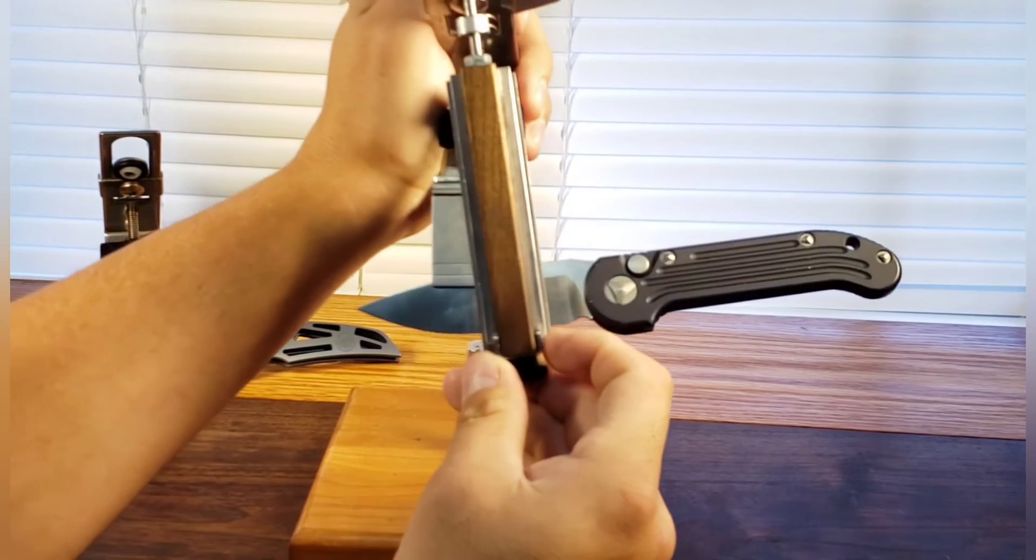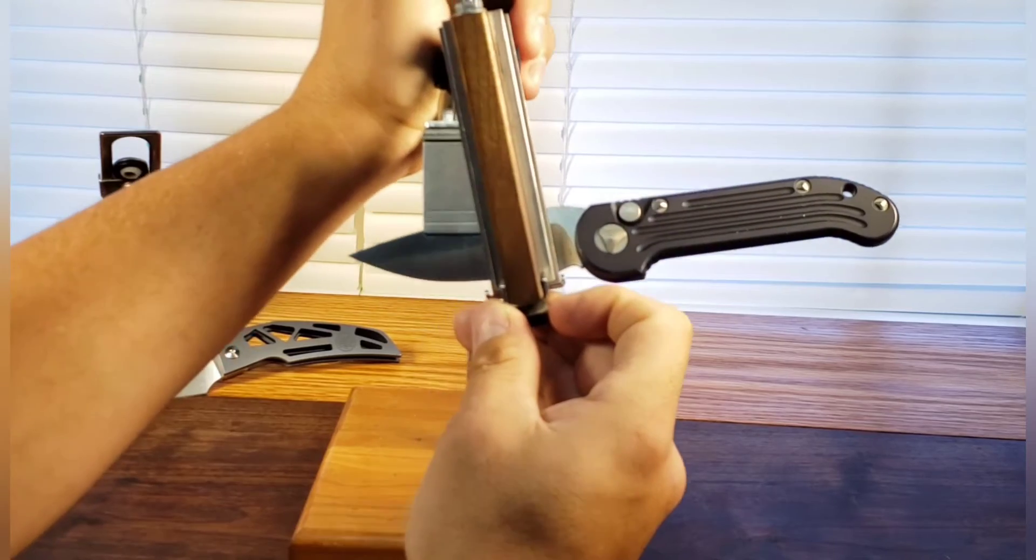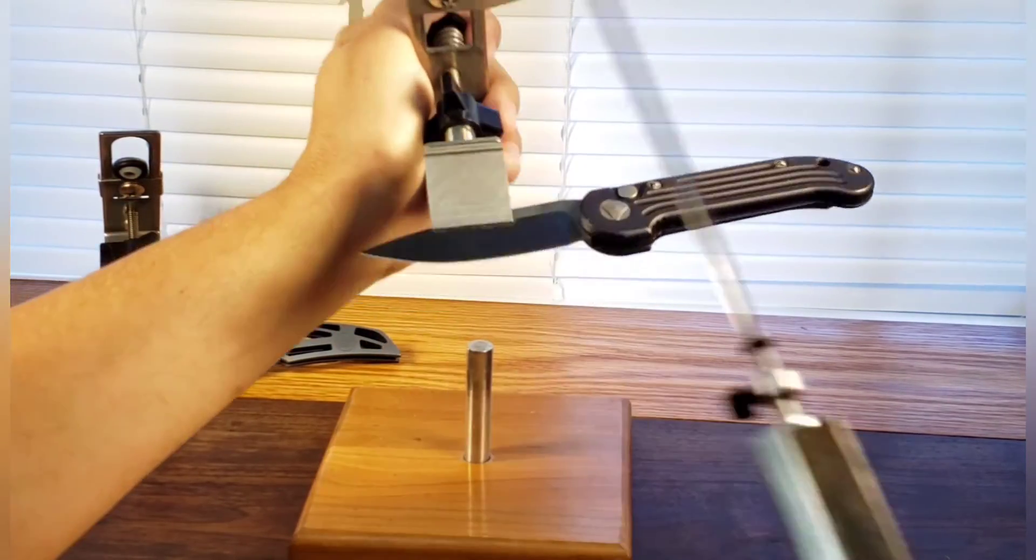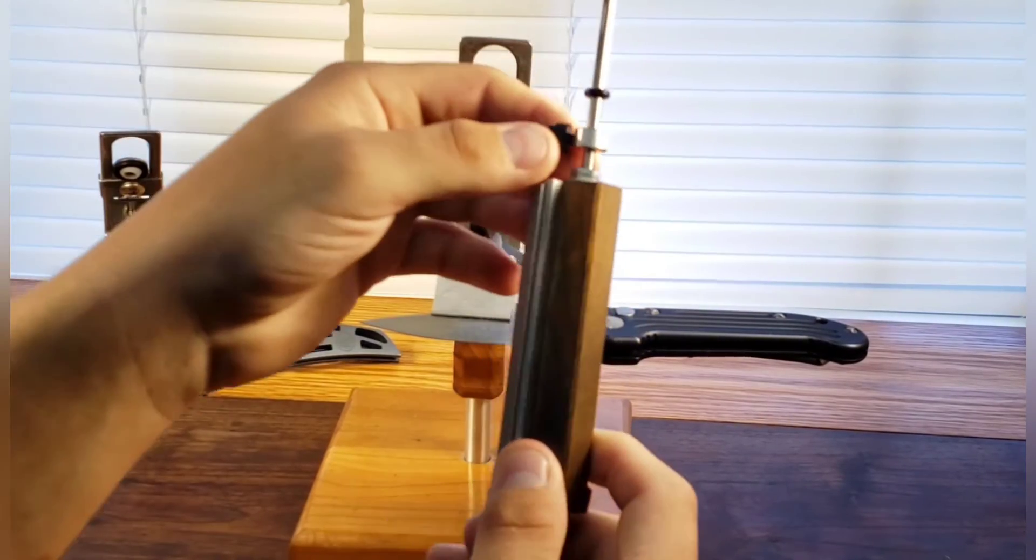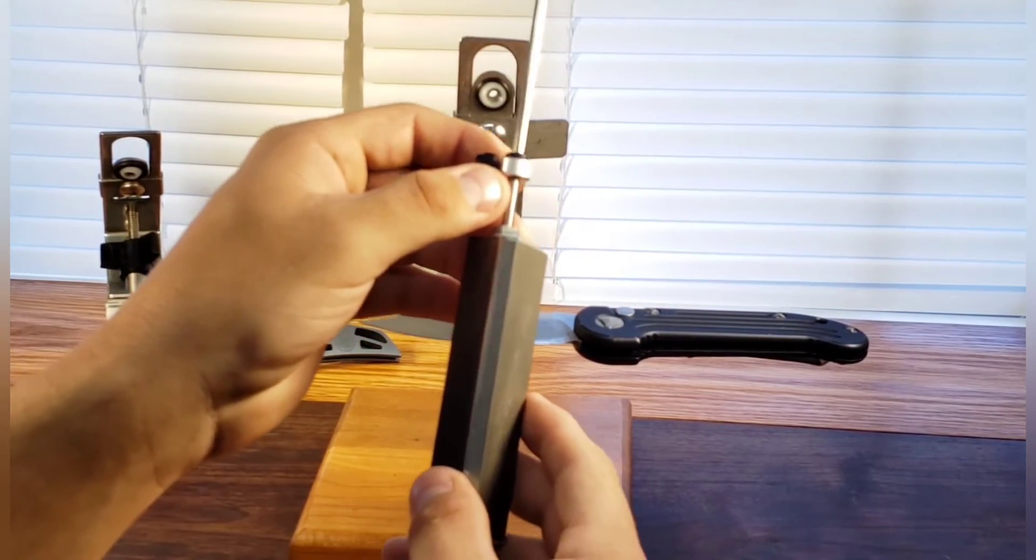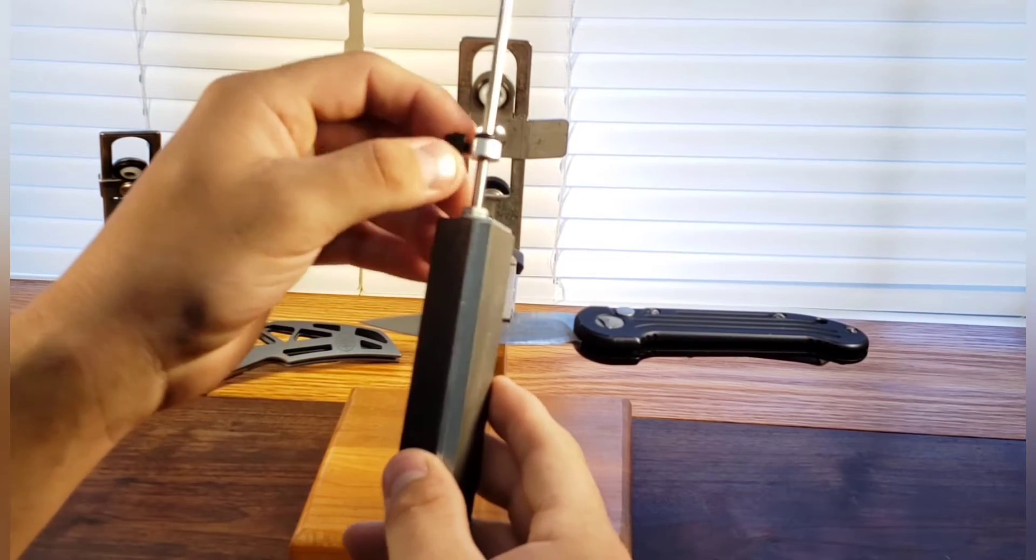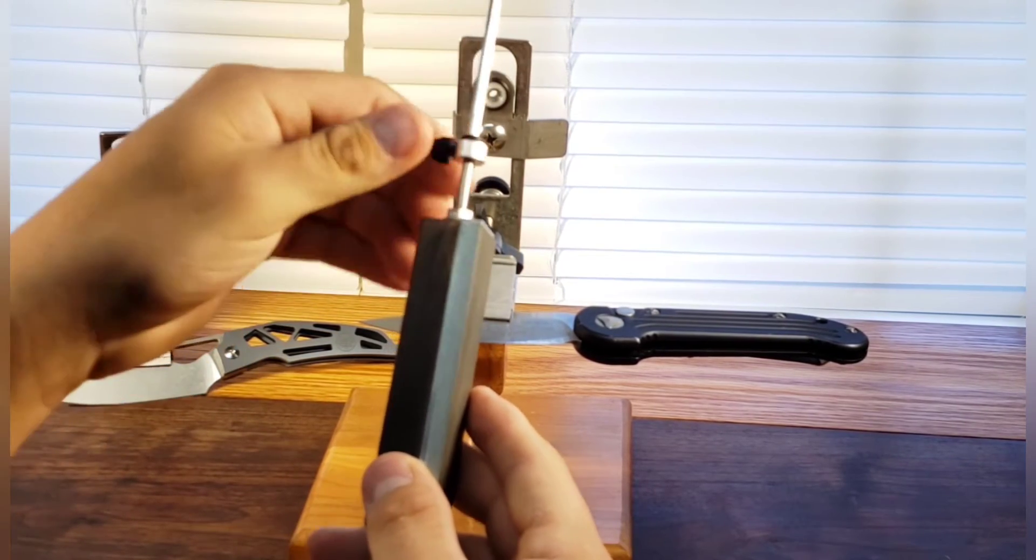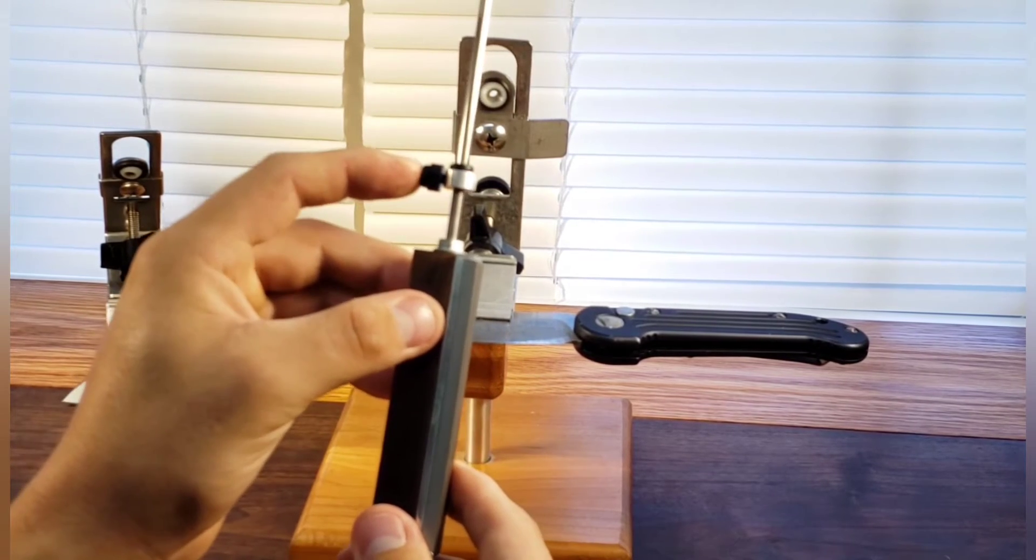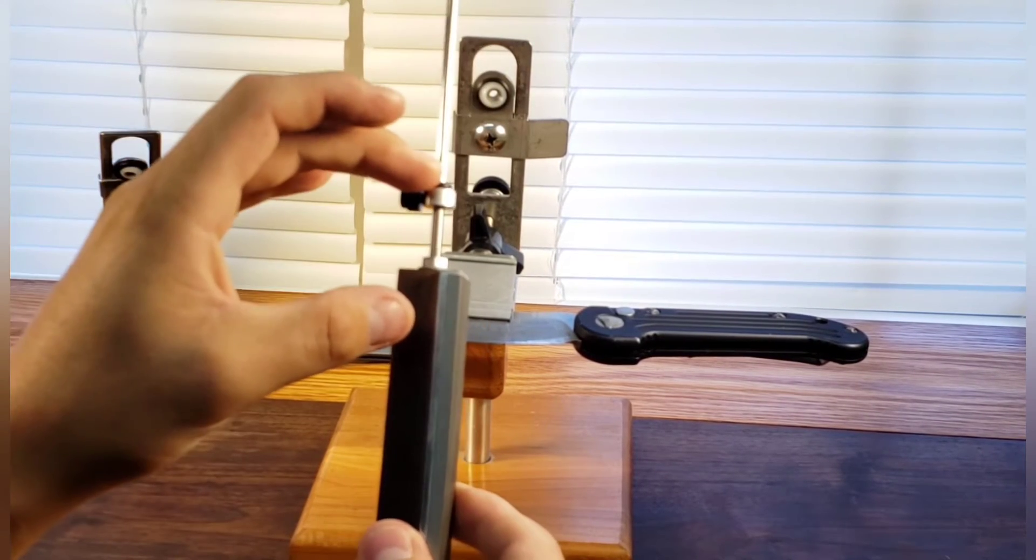So now that that's done, you take your stop collar itself and you'll want to slide it up to butt up with that o-ring and you'll want to lock it down. The reason for using the stop collar is that this secures that position and locks it down so that it doesn't move.